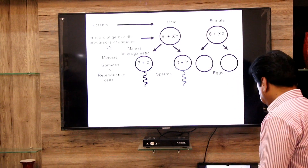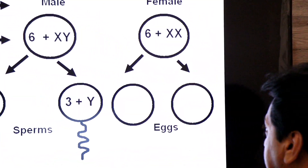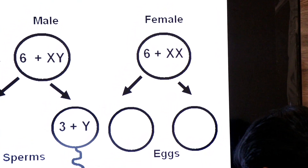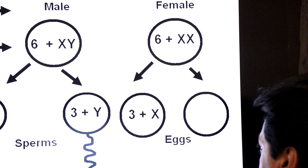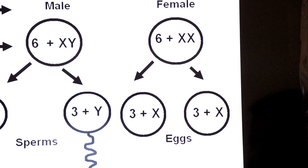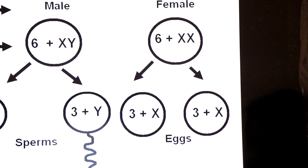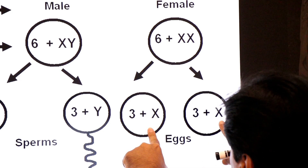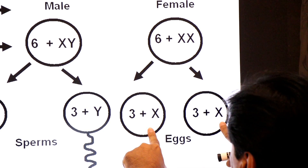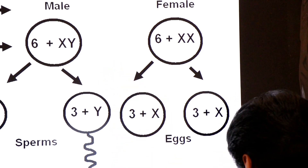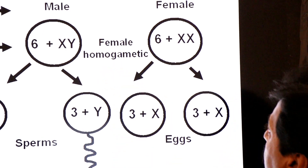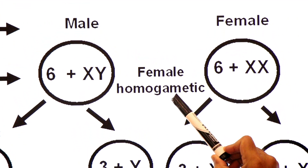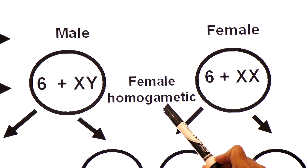Ab aate hain female pe. Female ke 8 chromosomes mein se: 3 autosomes + X go to one ovum, and 3 autosomes + X go to another ovum. Both eggs carry X chromosome — X are similar. It means the female of Drosophila is homogametic. Homo means same, gamos means gametes. She produces the same types of gametes or eggs.